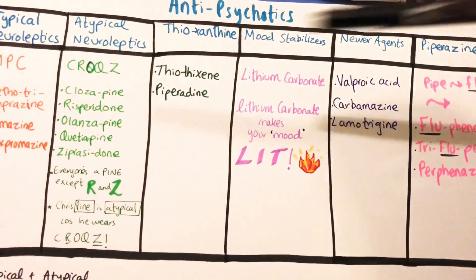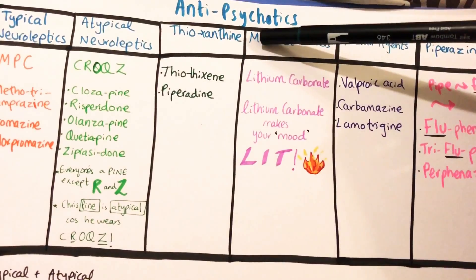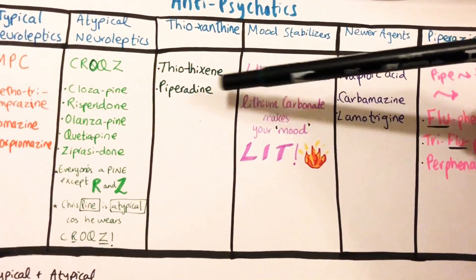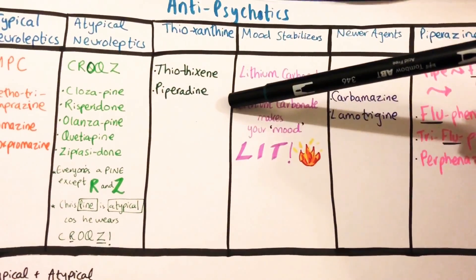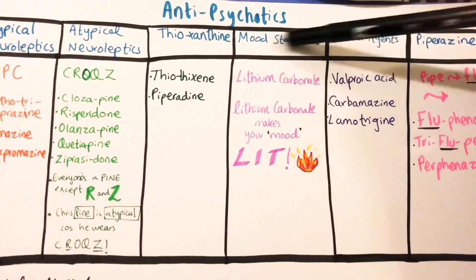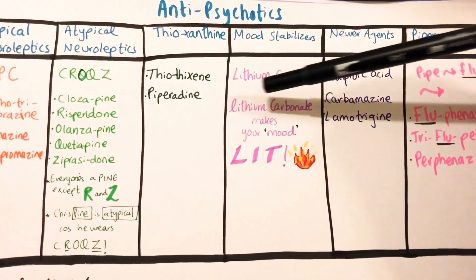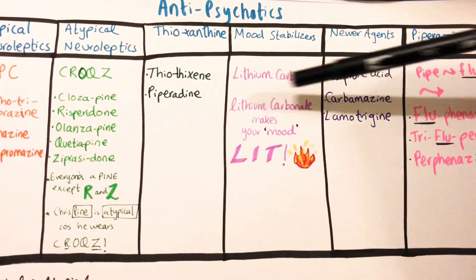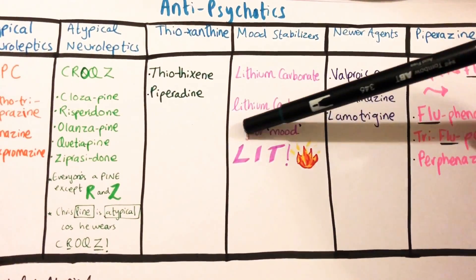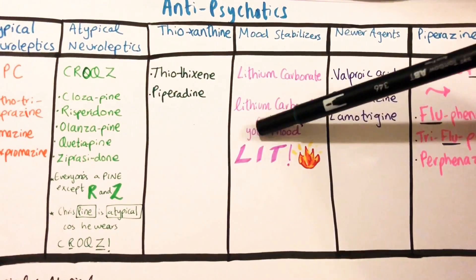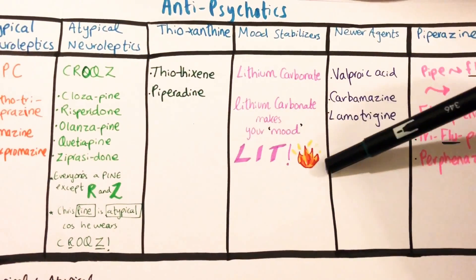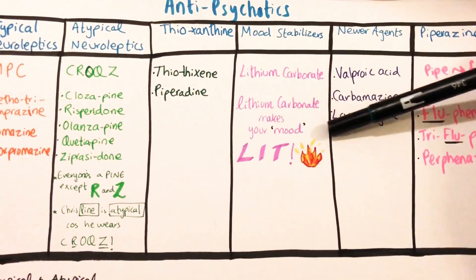The TMNP stands for thioxanthines, then theothixazine, piperidine. Then we have mood stabilizers — the example is lithium carbonate. Lithium carbonate makes your mood 'lit' — get it? 'Lit' — so it makes your mood really good.